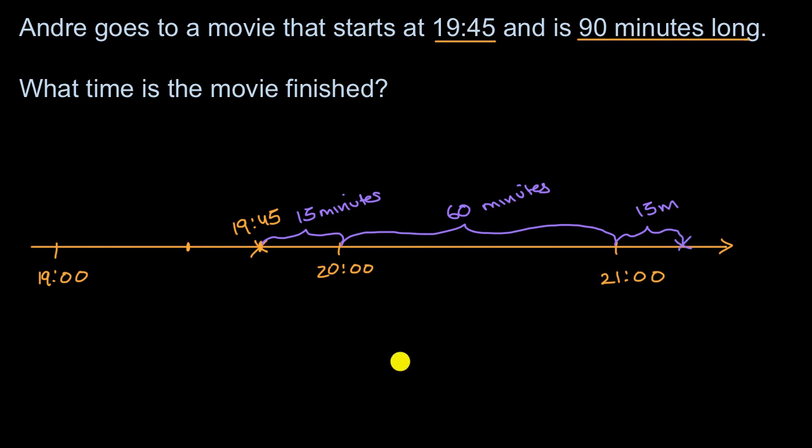And so when does the movie end? Well, as you can see, we started at 19:45. 15 minutes got us to 20. Another 60 minutes got us to 21. So now we have a total of 75. And then another 15 would give us a total of 90.